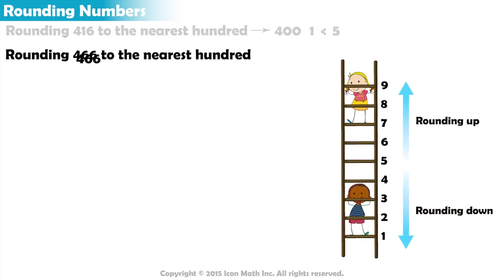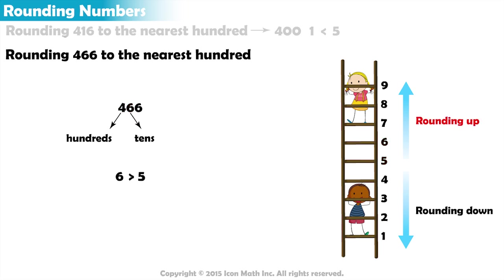Let's now try and round 466 to the nearest 100. We have 4 in the hundreds place and 6 in the place to its right. 6 is greater than 5, so we round up, and that gives us 500.